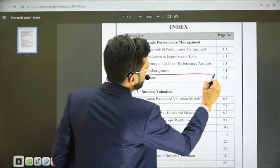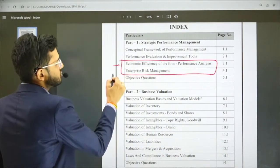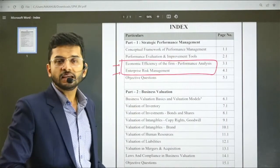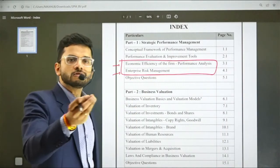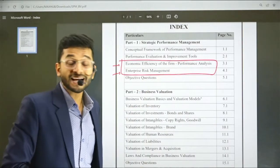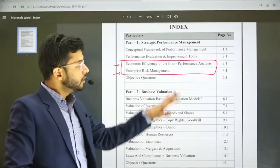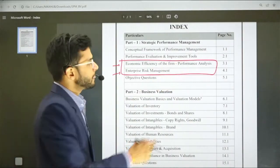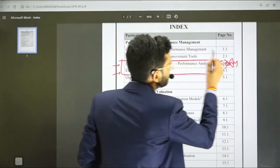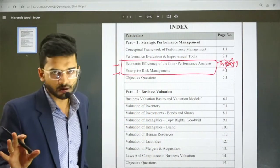Practical questions are going to come from these two chapters: Economic Efficiency and Enterprise Risk Management. Economic Efficiency has mathematical equation questions like x2 plus 2x plus 3, solving for maximization and minimization of profit. This chapter is not important from a theory standpoint. You can leave theory of this chapter.